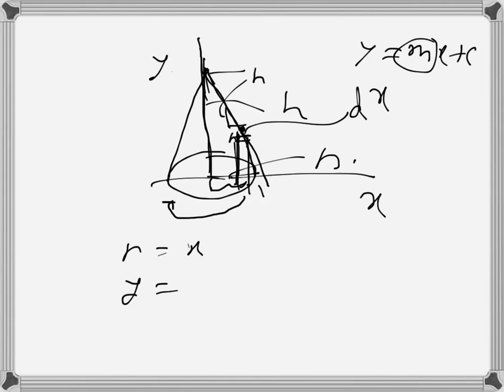This has a negative gradient, so minus h over r is the gradient times x. This is the equation representing y at any point of the straight line: minus h over r times x, plus h, since it cuts the y-axis at h.